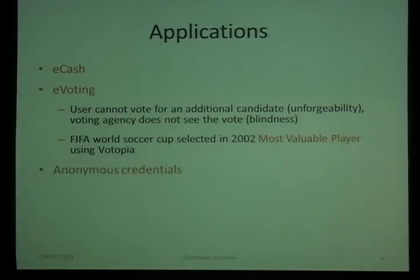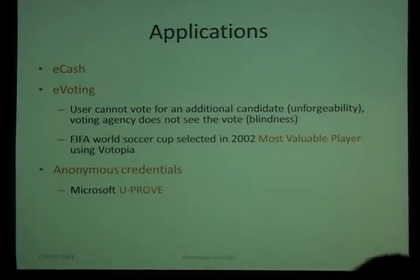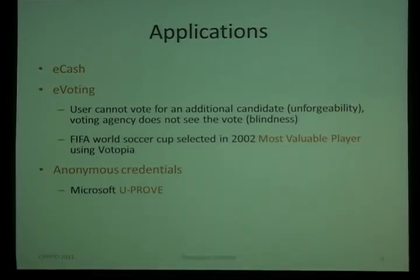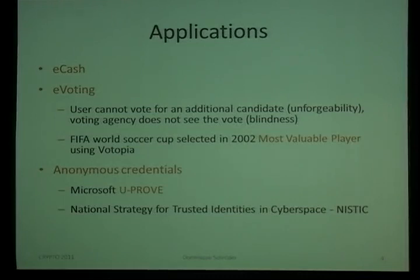Blind signatures are also used in anonymous credentials. For example, Microsoft recently launched U-Proof, which uses blind signatures as a building block. Also, the National Strategy for Trusted Identities in Cyberspace is working on anonymous credentials, and hopefully they will use blind signatures as well.